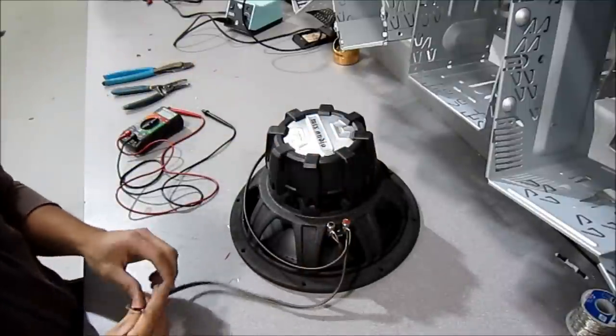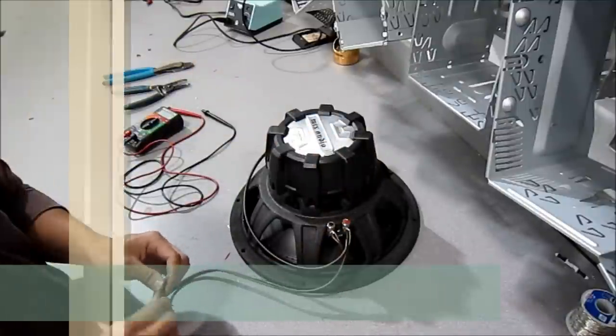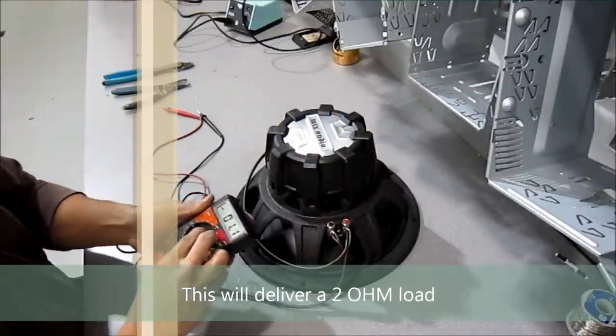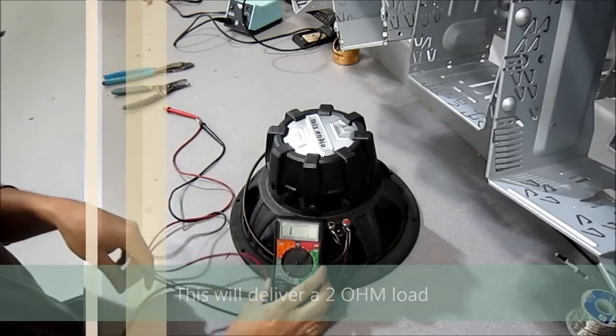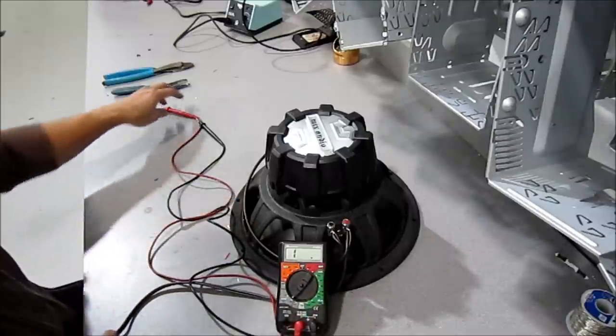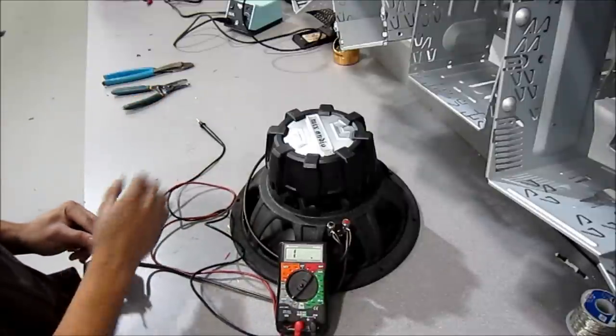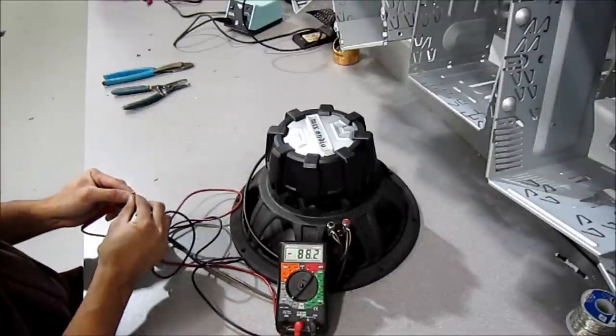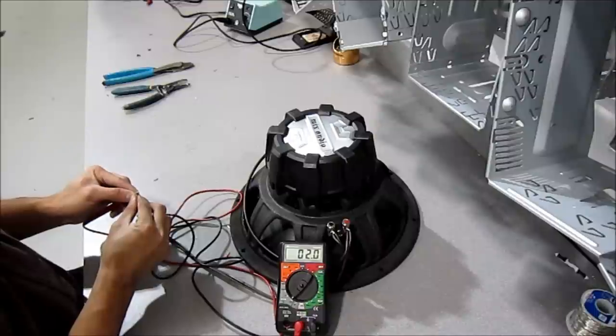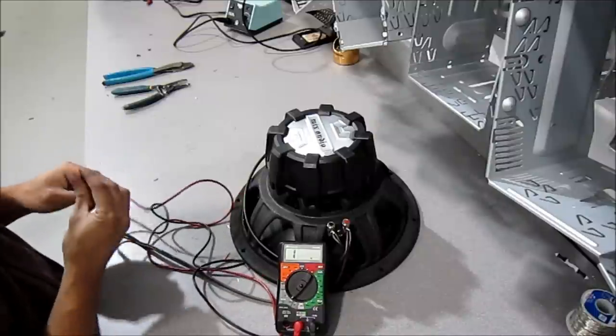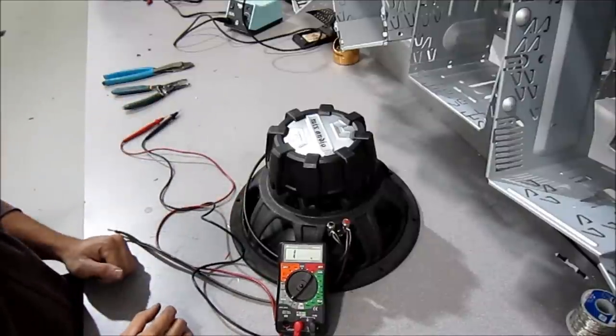So now your voice coils are wired up in parallel and you're set up for a 2 ohm load. So take your multimeter. Hopefully you guys can see that. And just test it. So now we're at a 2 ohm load. So for a 2 ohm stable amplifier, you're going to get maximum power.